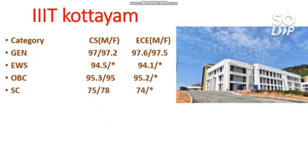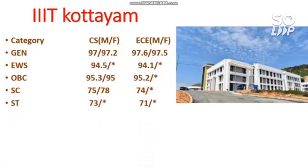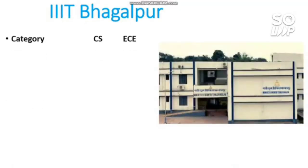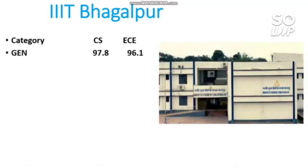Continuing with male cutoffs for IIIT Kota: SC requires 75 for CS and 74 for EC. ST requires 73 and 71 percentile. The next IIIT is Bhagalpur, with cutoffs for CS and EC: General requires 97.8 and 96.1. EWS requires 94.4 and 93.